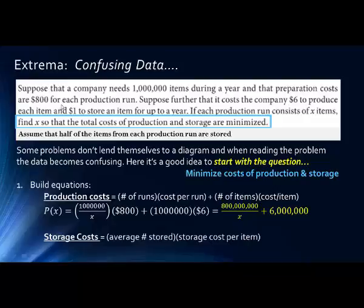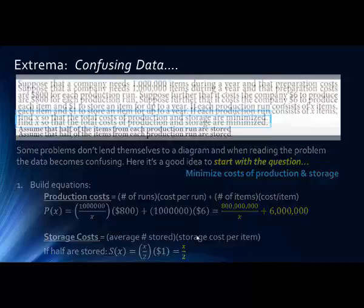Now let's look at our storage costs. We also know it costs a dollar to store an item for up to a year. So our storage costs are just the average number stored times the storage cost per item. The last line says assume that half of the items from each production run are stored. Well, each production run has x items in it. So if half of them are stored, notice that we have x/2. Half of each production run are stored times the dollar, the cost. So now we have both of the elements for our total cost function.